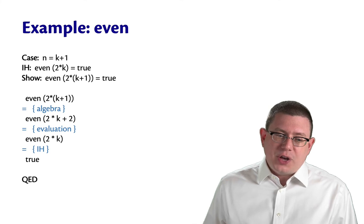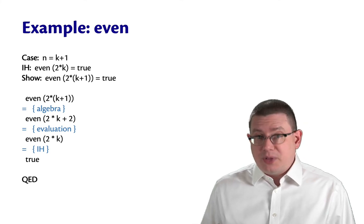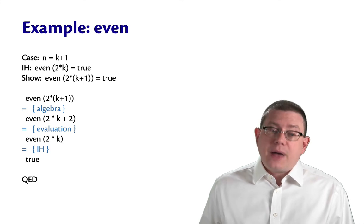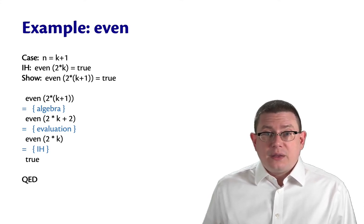So by algebra, 2 times K plus 1 is going to be 2 times K plus 2. According to the definition of even, that will evaluate to even of 2 times K. Why?